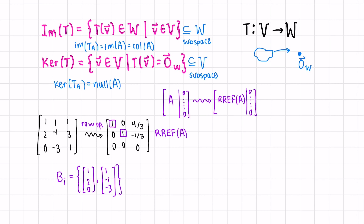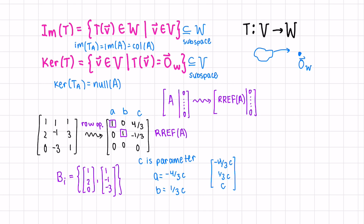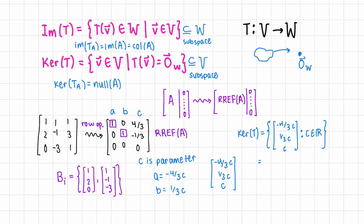In this case, let's call the columns A, B, and C. Column C is non-leading, so let's say C is a parameter. Let's express A and B in terms of C. A would be negative 4 over 3 times C, and B would be positive 1 third C. So a solution to our homogeneous system would be negative 4 thirds C, 1 third C, and C, because C is our parameter. This means the kernel of our transformation we could write as a span — to eliminate fractions, equivalently the span of negative 4, 1, 3 — and this is our basis of the kernel.